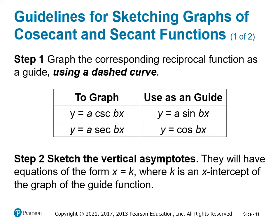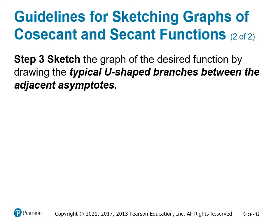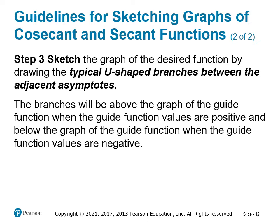Once we've graphed the reciprocal functions — sine and cosine — we can immediately sketch the vertical asymptotes. Cosecant will be undefined when sine is zero, and similarly with secant and cosine. All we have to do is look for the x-intercepts of the guide function and draw vertical asymptote lines through those points. From there, we sketch the U-shaped branches that fall in between the asymptotes, with an intersection point at the maximums and minimums of sine or cosine. The branches are above the guide function when it's positive and below it when it's negative.